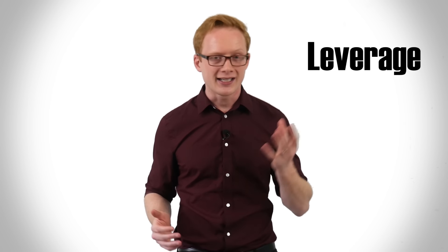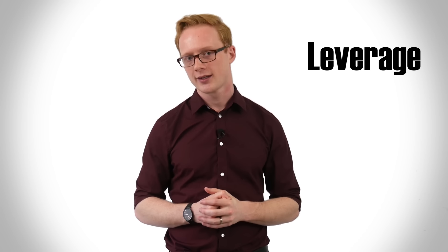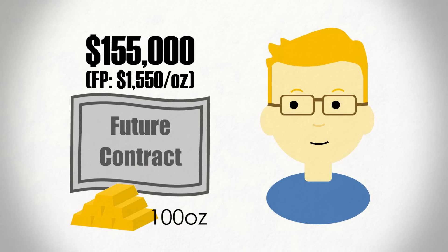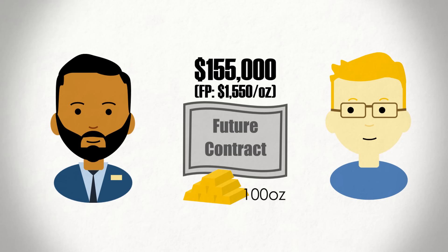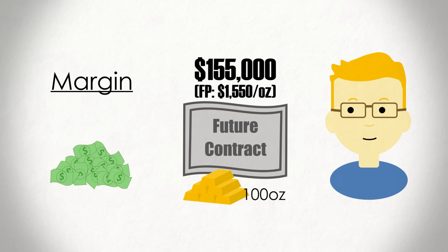Futures seem to offer a pretty convenient method for gaining exposure to commodities, but as with any investment, they do come with their own risks. For one, future contracts involve the use of leverage — something that amplifies how much you can gain or lose from your investment. To summarize, futures only require a fraction of the contract's value to be invested by the speculator. With our example, if we had taken a long position in the $155,000 gold contract, our broker would initially only require that we deposit a margin — effectively some percentage of the value of the contract — as a deposit on the position.